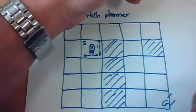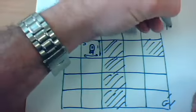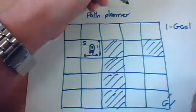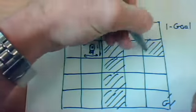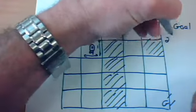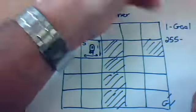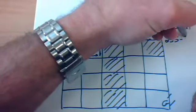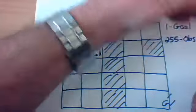So let's say that one is our goal position. And let's say a high number, let's just put 255, it's a high number, is going to be an obstacle.